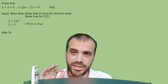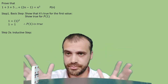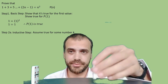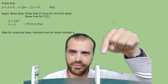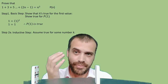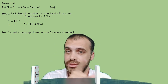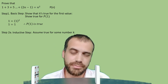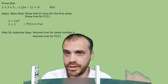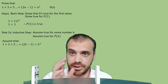The next step is called the inductive step, and it's a bit tricky to wrap your head around. We're going to assume that it's true for some number k. It could be any value — I'm just setting up a domino and saying that's k. Mathematically, we assume true for P(k): that is, 1 plus 3 plus 5 plus ... plus 2k minus 1 equals k squared.